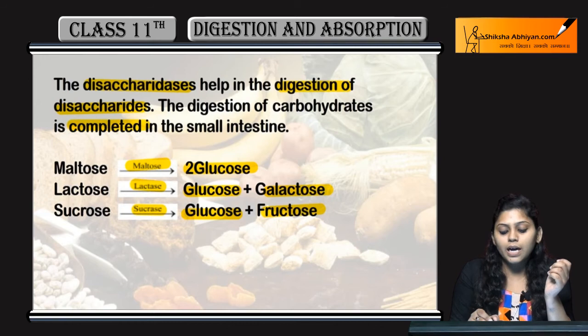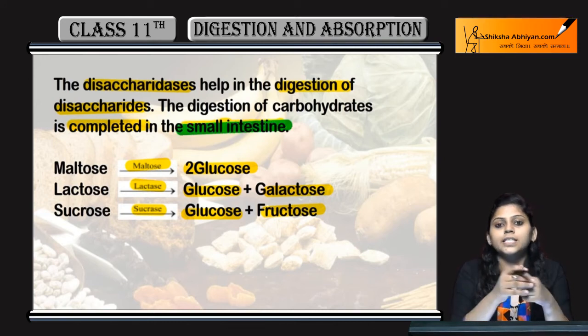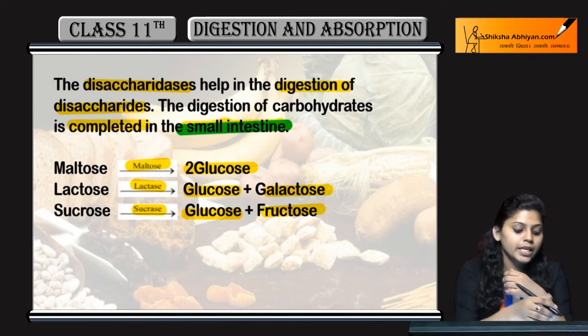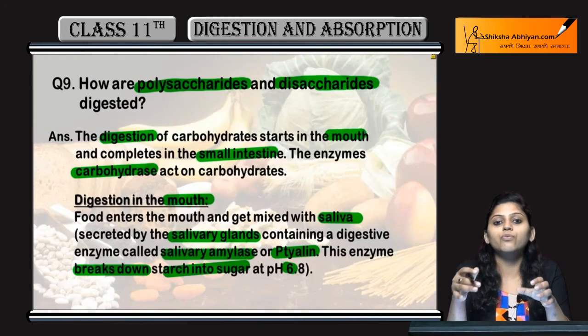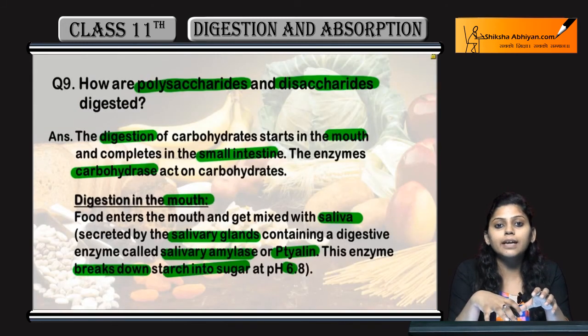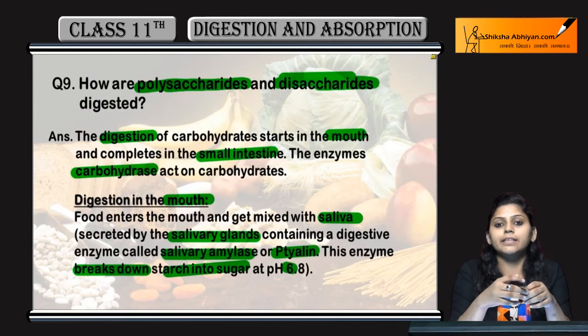Carbohydrate digestion stops in the stomach and is completed in the small intestine. So this was the digestion of polysaccharides and disaccharides.